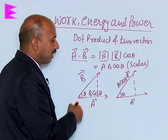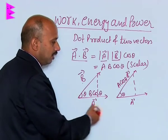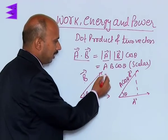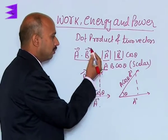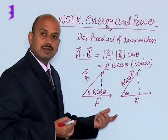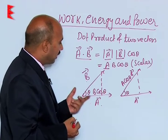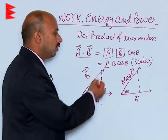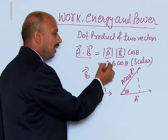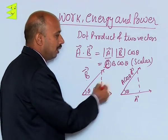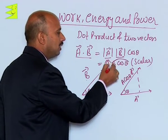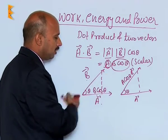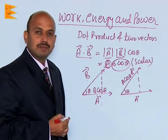So the dot product of two vectors is defined as the product of the magnitude of one vector and the magnitude of the component of the other vector along the first vector. Here, A is the magnitude of vector A, and B cosθ is the magnitude of the component of vector B along vector A.